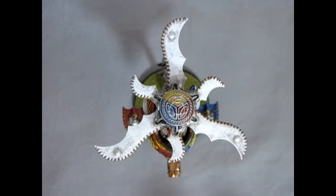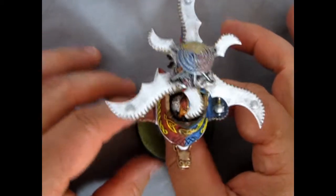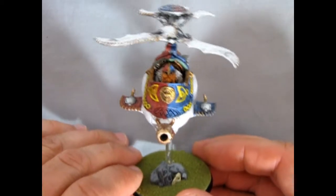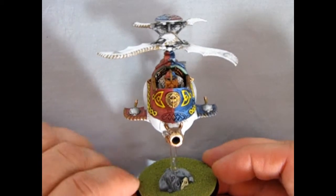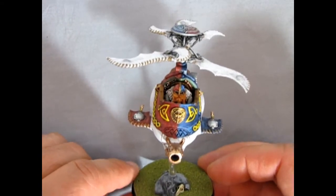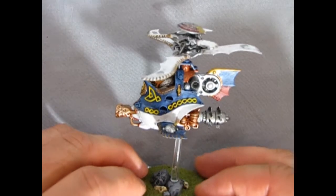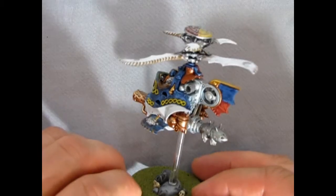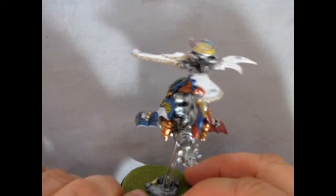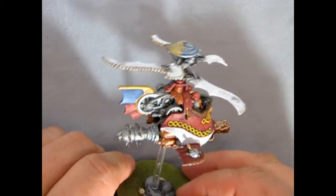A few years ago, I made up this gyrocopter and I painted it in the colors of Karak Eight Peaks, which of course was one of the areas that the dwarves controlled way back in 8th edition fantasy. I like the colors on this and I think that our gyrocopter that we are going to paint today will follow in the same color scheme.